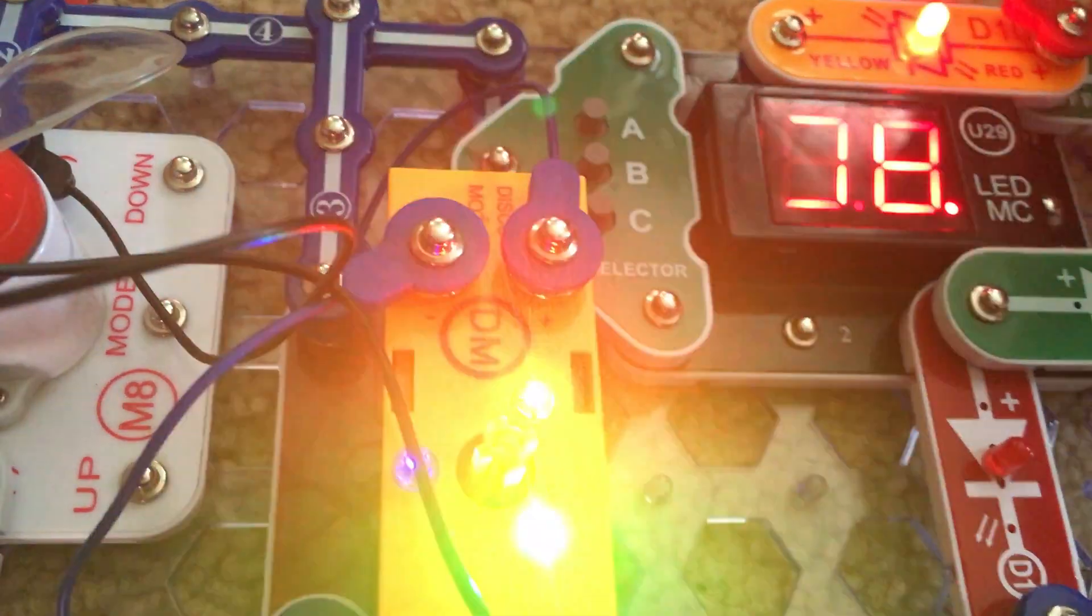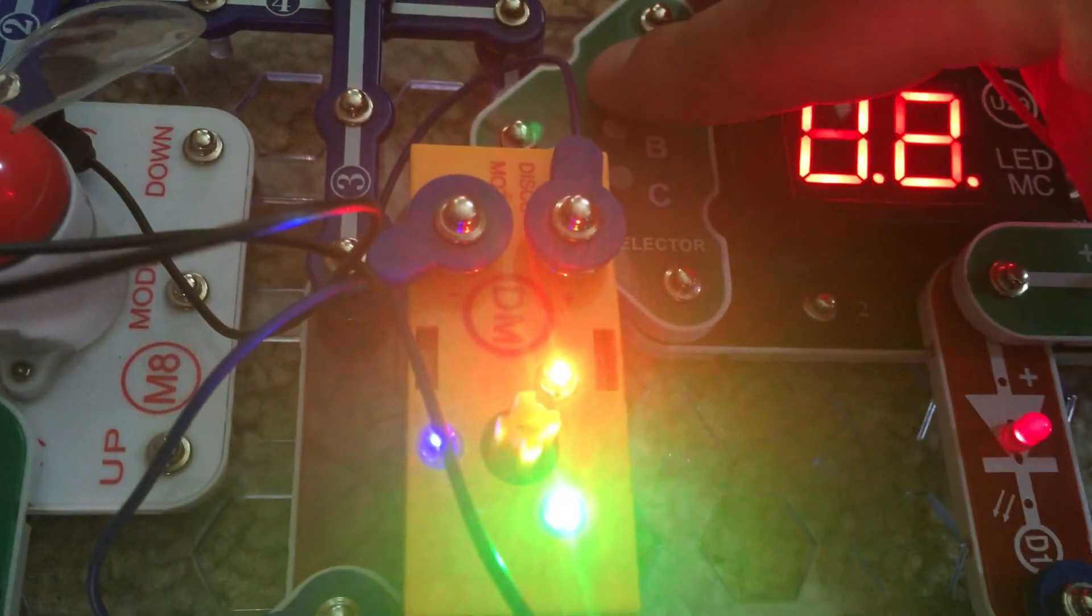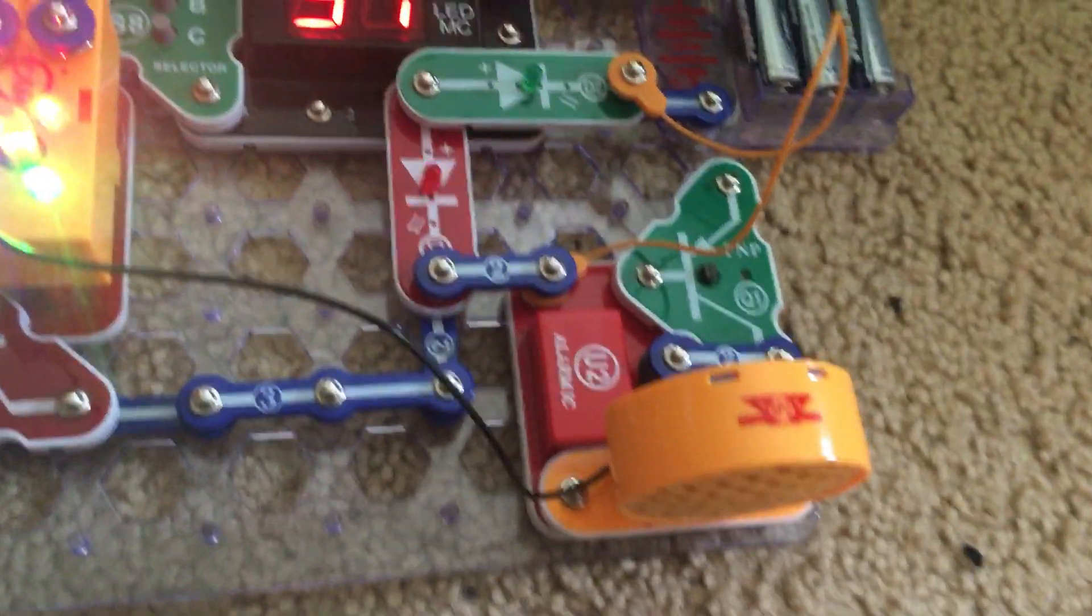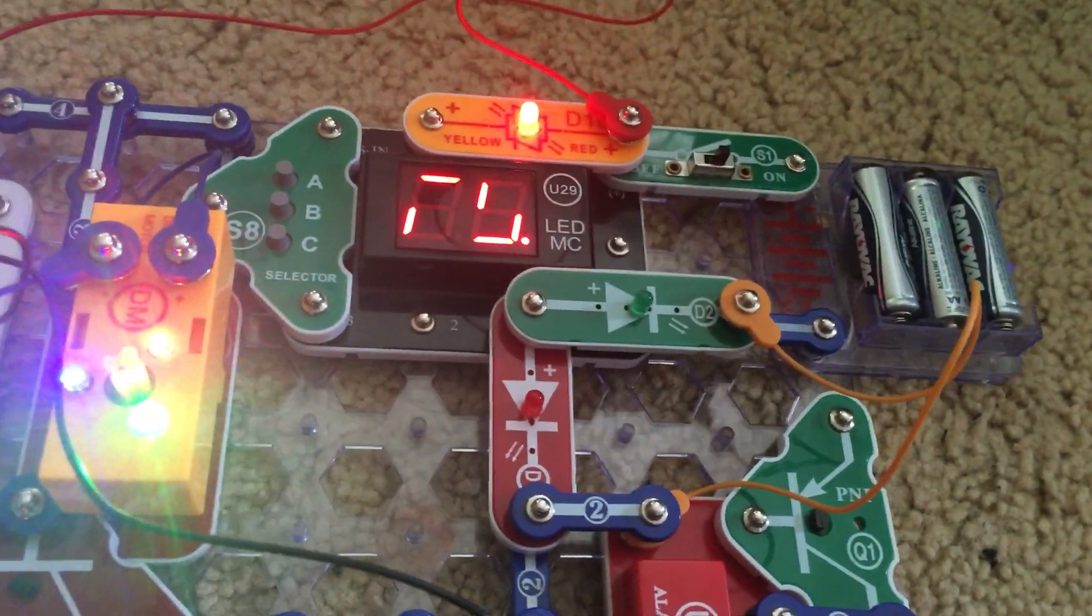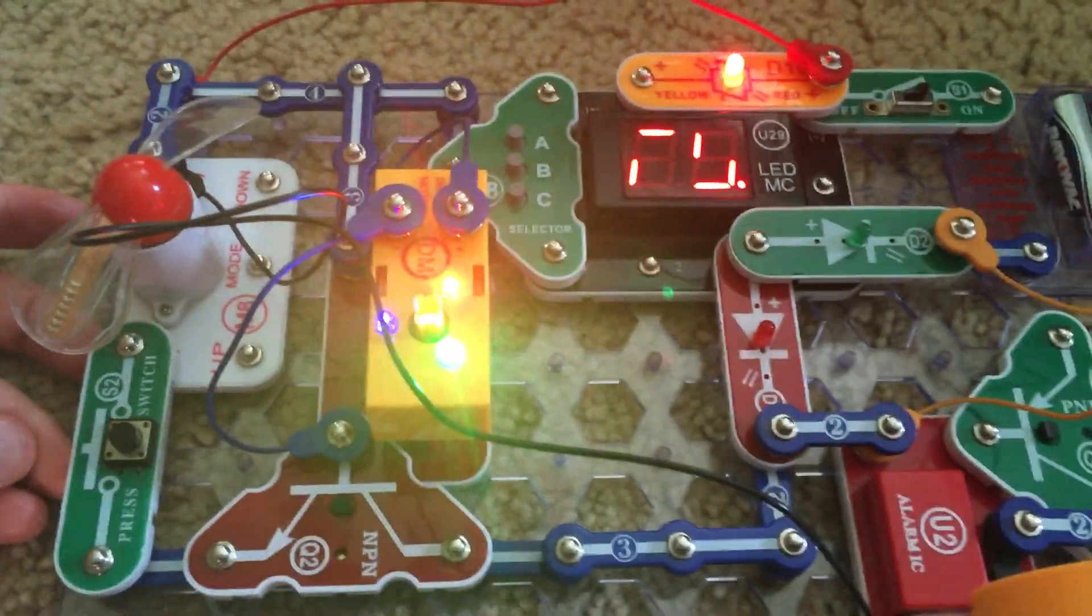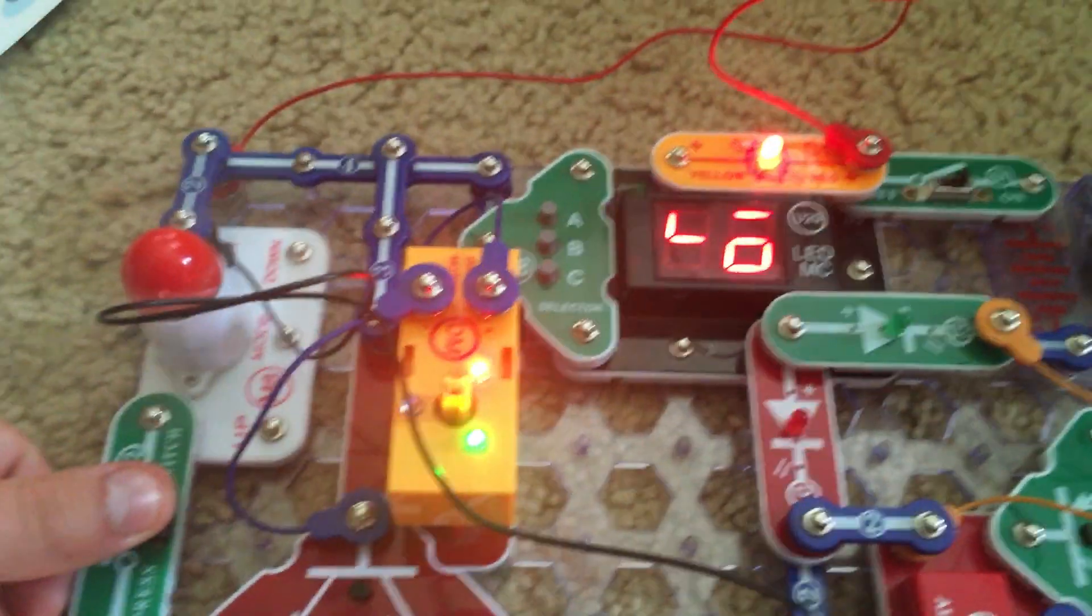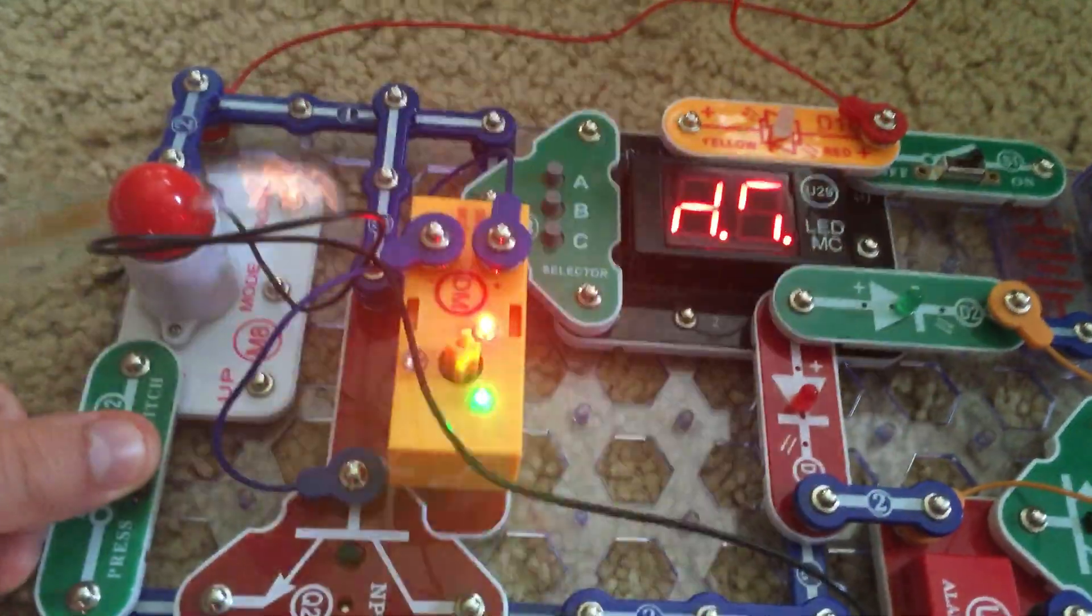And if I want, I can reset the circuit and select game two or three so that the LEDs and the U29 display change at a faster rate. I'm going to hold down the programmable fan again.